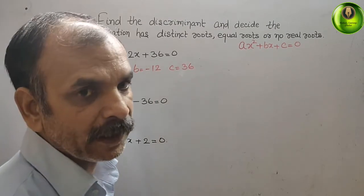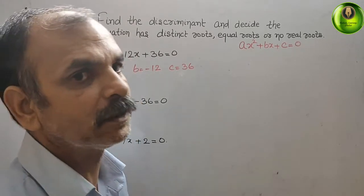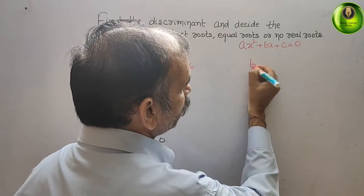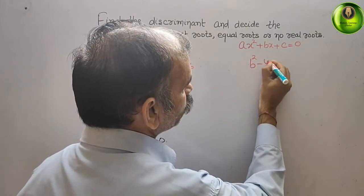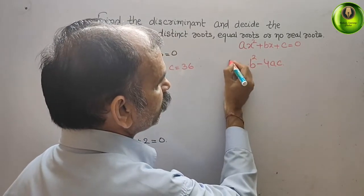Third step is that we have to go for discriminant. What is the discriminant? So, discriminant is nothing but, it should be b square minus 4ac. That is your discriminant, that is your d.